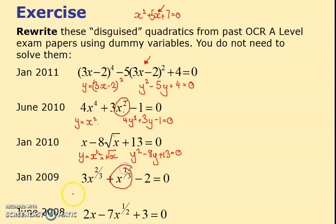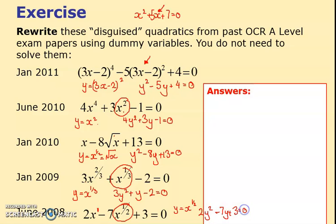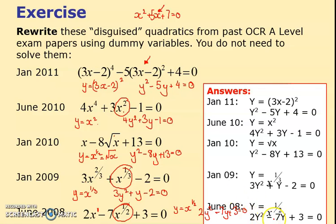What's this one? You look at this: y equals x to the third, so I've got 3y squared plus a single y minus 2 equals 0. And y equals, look at the middle term, y is x to the half, so I've got 2y squared minus 7y plus 3 equals 0. Hopefully my answers are the same.